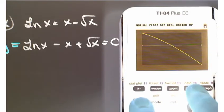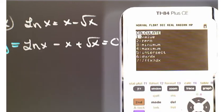To find the root, you hit the second key, then the calc key. That takes you to the calculate menu. And we want the zero, which is another way of saying that you want the root.